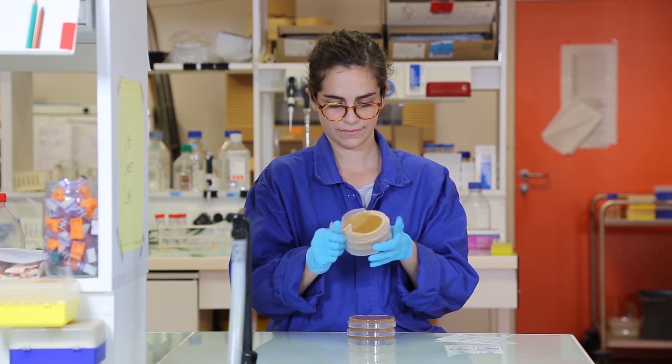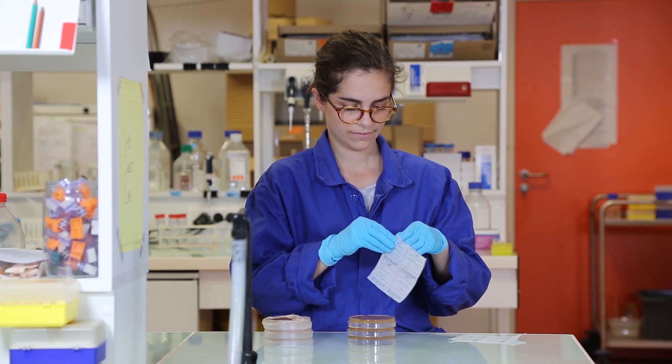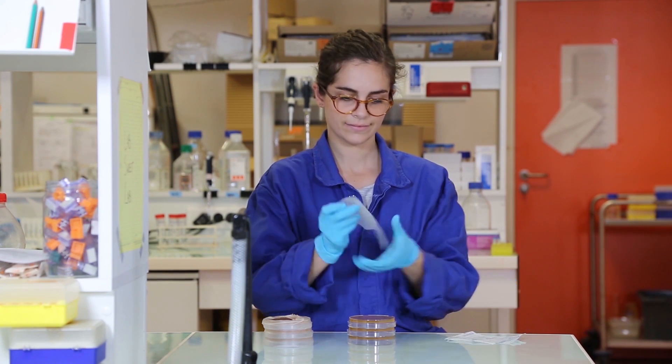Since we only plated 100 microliters, first we multiply the number of colonies we have times 10. Then we multiply times the dilution factor.